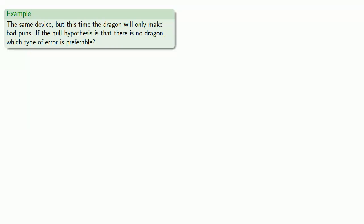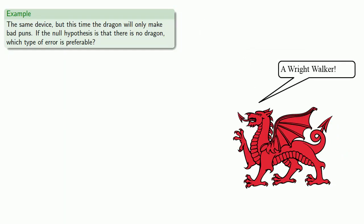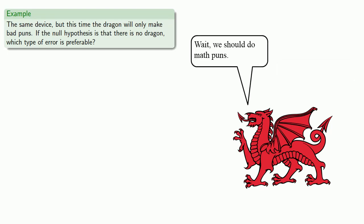What if we use the same device, but this time the dragon will only make bad puns? And again, if the null hypothesis is that there are no dragons, which type of error is preferable? So we can do the same analysis.